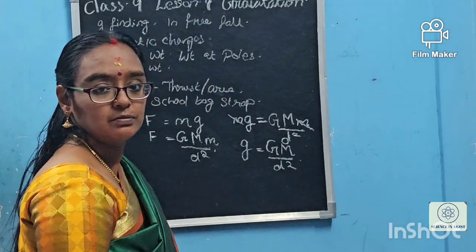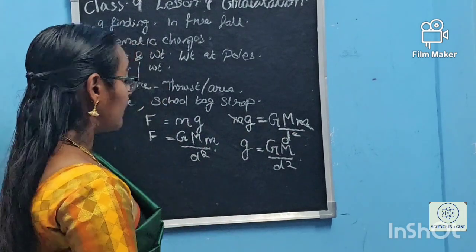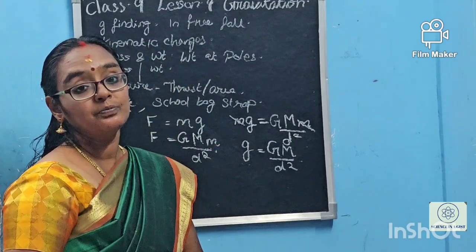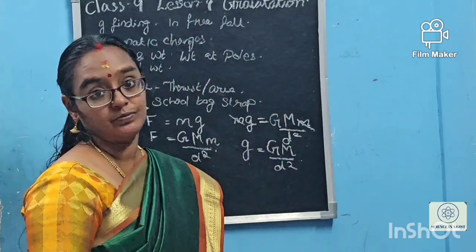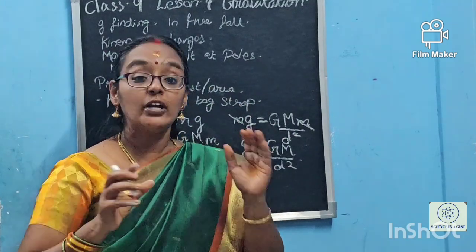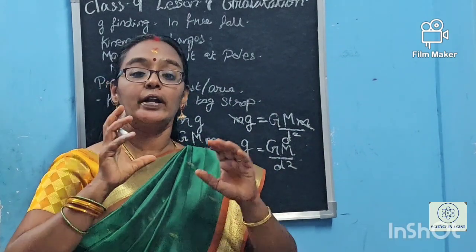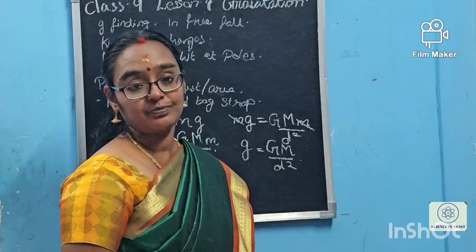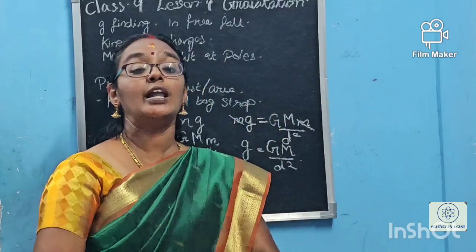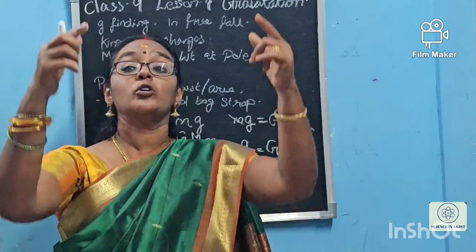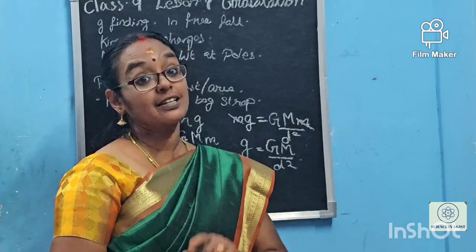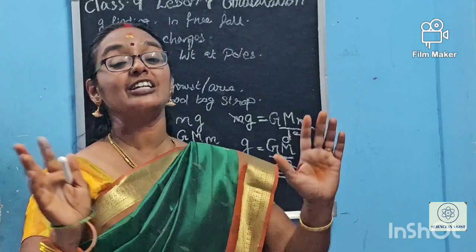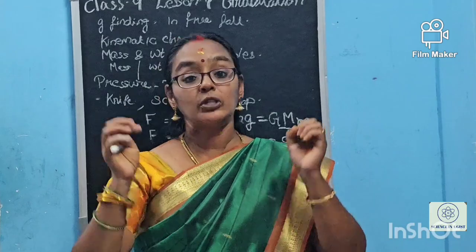What do we understand from g = G·M / D²? Acceleration due to gravity is independent of the body which is falling down. Whether the body is hollow, heavy, or of different shape, size, or weight, g is the same. That is why the metal ball and the rubber ball both reach the ground at the same time — acceleration due to gravity is independent of the weight of the falling objects.